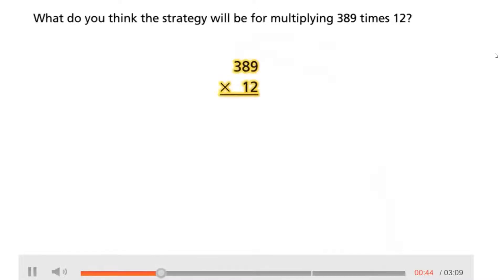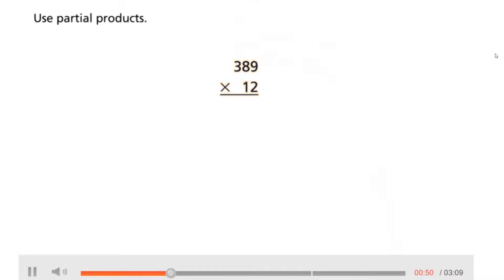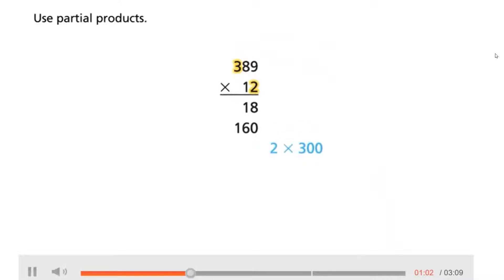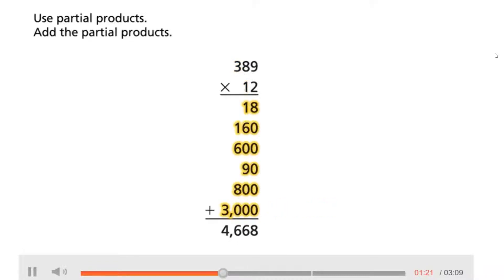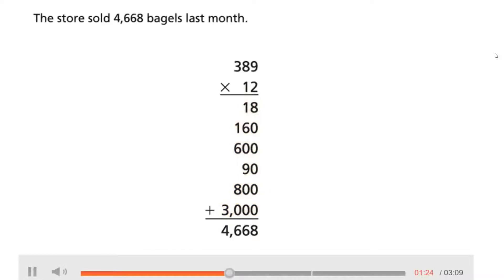What do you think the strategy will be for multiplying 389 times 12? We can use partial products: 2 times 9 equals 18, 2 times 80 equals 160, 2 times 300 equals 600. Then 10 times 9 equals 90, 10 times 80 equals 800, 10 times 300 equals 3,000. Adding all the partial products, the store sold 4,668 bagels last month.